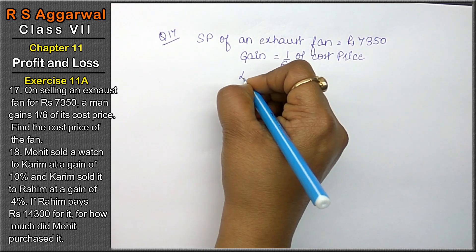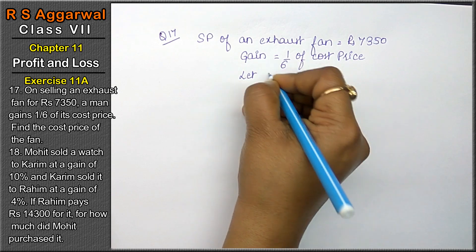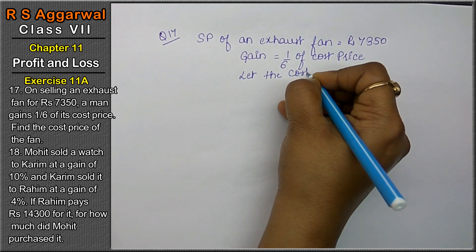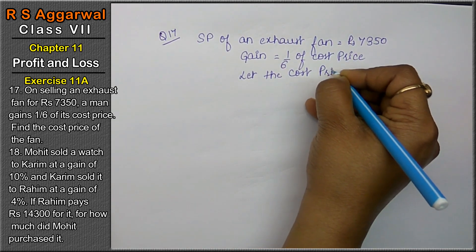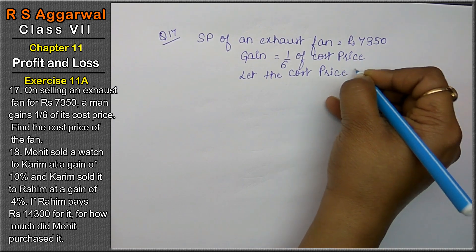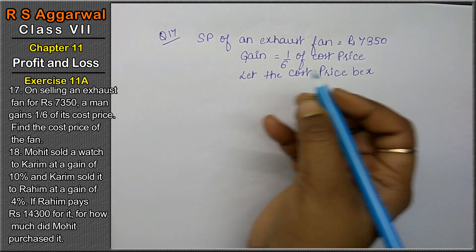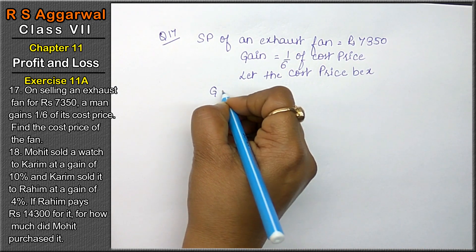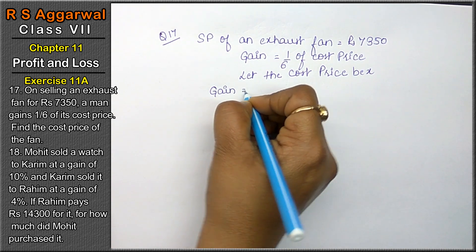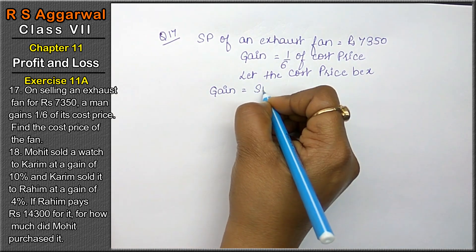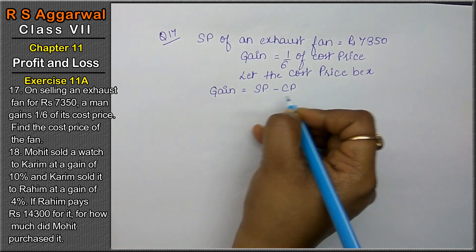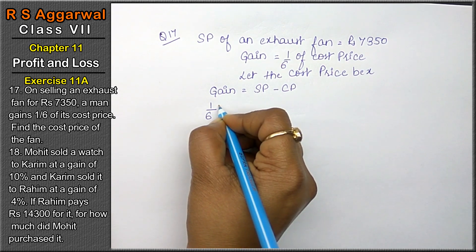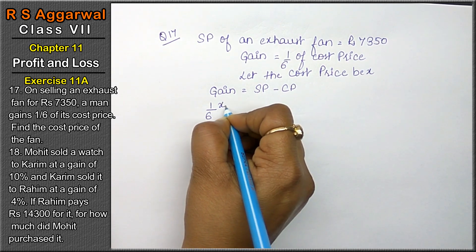Cost price is not given. Let the cost price be X. So, the gain formula is: Gain = SP minus CP. Gain is given as 1/6th of cost price. Cost price we have taken as X.